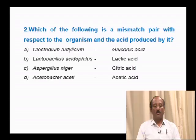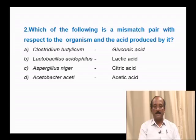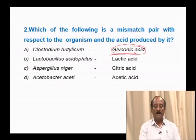Question number 2: Which is the mismatched pair with respect to organism and acid produced? Clostridium butyricum — gluconic acid; Lactobacillus acidophilus — lactic acid; Aspergillus niger — citric acid; Acetobacter aceti — acetic acid. Clostridium butyricum produces butyric acid, not gluconic acid. Hence, gluconic acid is the mismatch. The correct answer is option A.